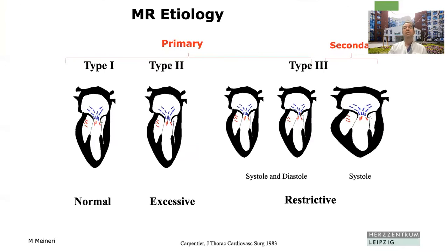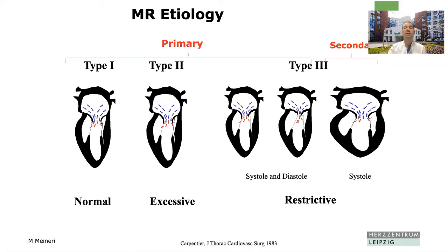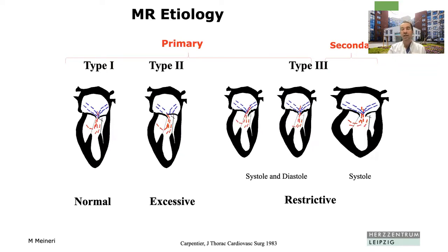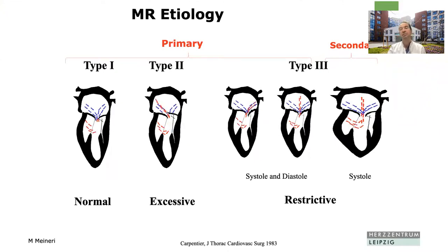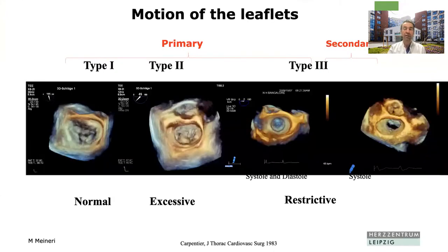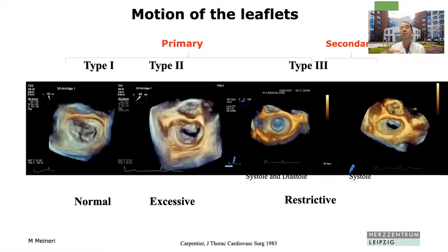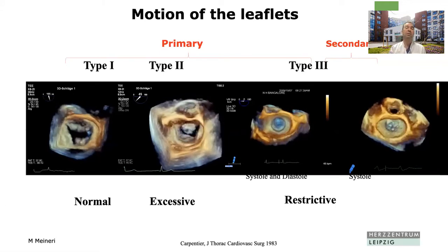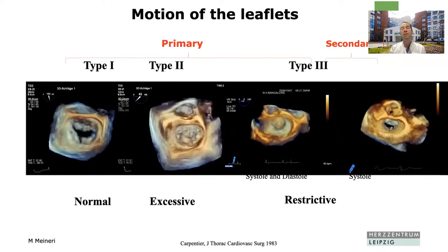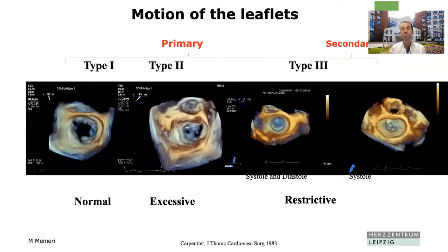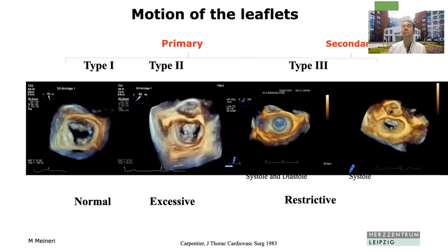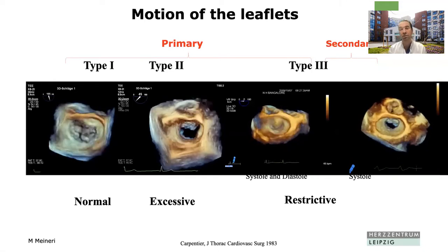When it comes to mitral valve assessment, we need to go back to the basics. What's important to assess first is the etiology of the mitral regurgitation. We use the Carpentier classification to divide the type of mitral valve regurgitation into three types — the third type is divided into A and B. On 3D ECHO with an en face view of the mitral valve, we can appreciate what these different types look like. We typically treat with clips type 2, with excessive leaflet motion, and type 3B, which is restricted or functional secondary mitral regurgitation.